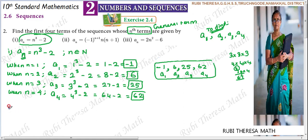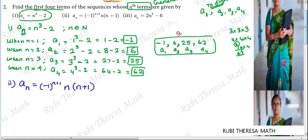Next, the second subdivision. The second sequence is defined differently. The nth term — the general term — is defined as aₙ = (-1)^(n+1) × n × (n+1). We have to find the first term, second term, third term, and fourth term. When n equals 1, we are finding the first term A1.